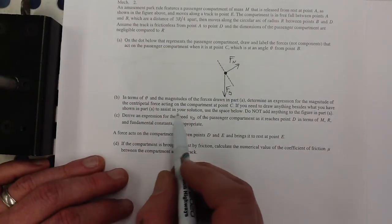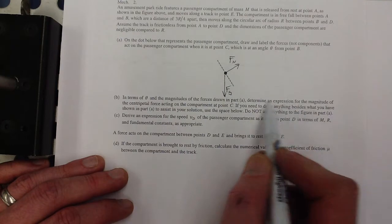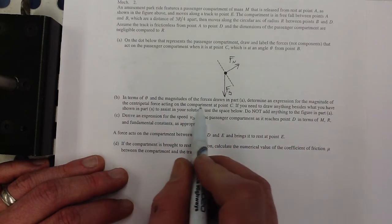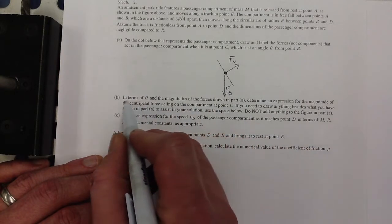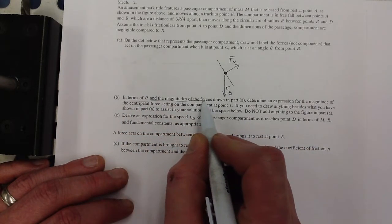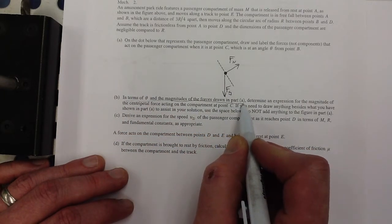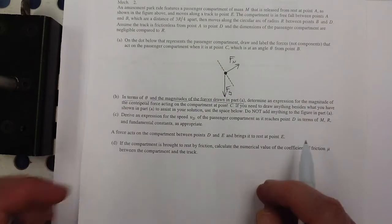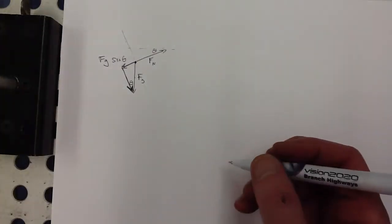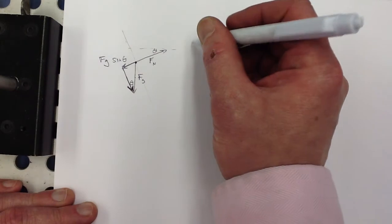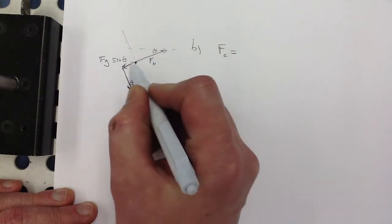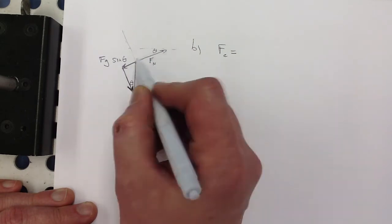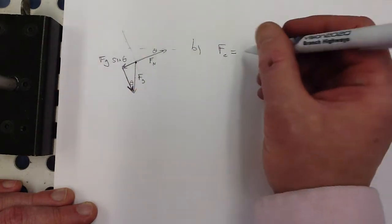And I think all they want here, if I'm not mistaken, they want us to determine an expression for the magnitude of the centripetal force acting on the compartment in terms of theta and the magnitudes of the forces drawn in part A. So they don't want us to do anything more than have this. The centripetal force is equal to, it would be this minus that, right? That's the net force toward the center. That's what centripetal force is.